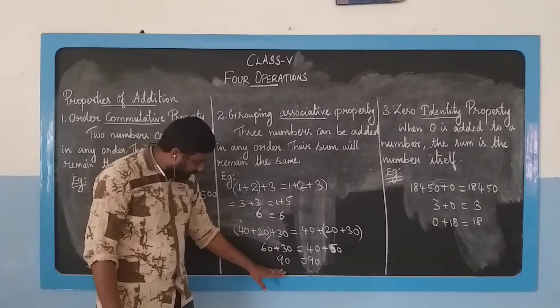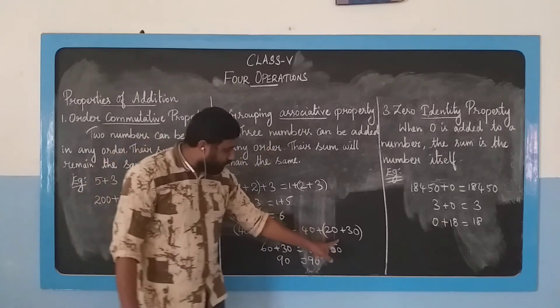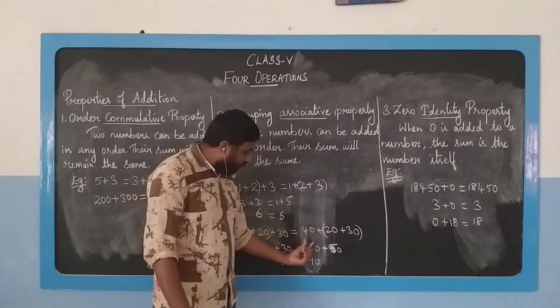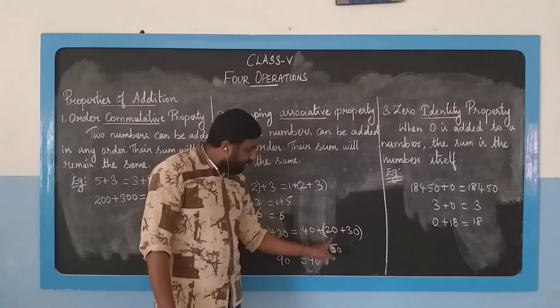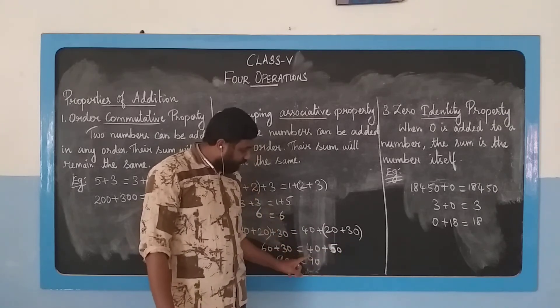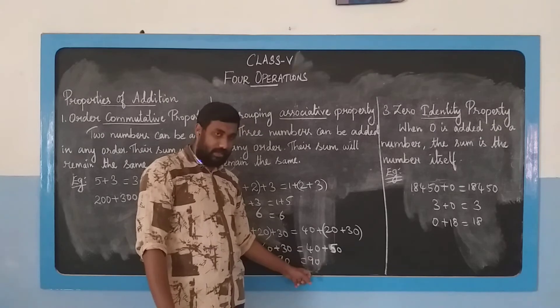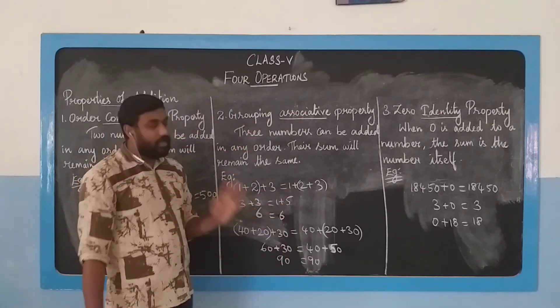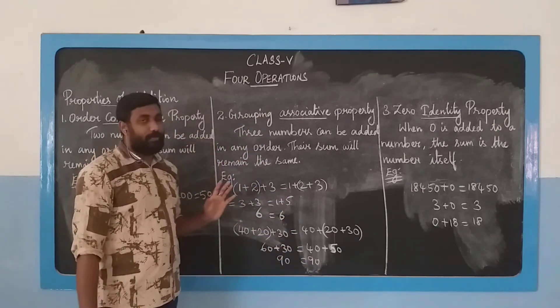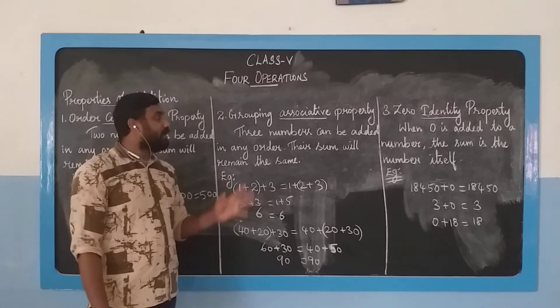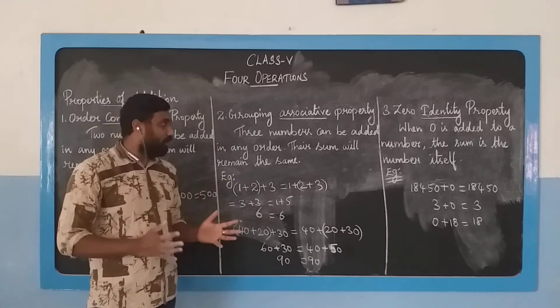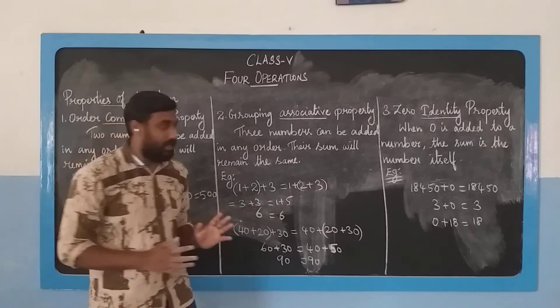This example shows that the associative property works. When three numbers are added in any order using different groupings, the sum remains the same.